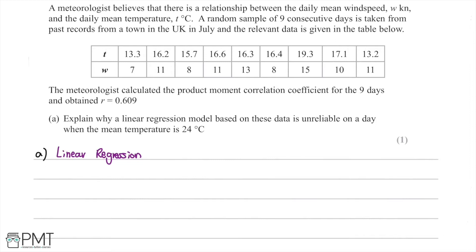We're told that the meteorologist calculated the product moment correlation coefficient for the nine days and obtained r = 0.609. In this question we are asked to explain why a linear regression model based on these data is unreliable on a day when the mean temperature is 24 degrees Celsius.